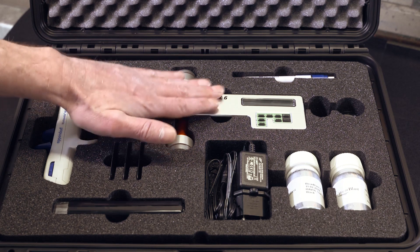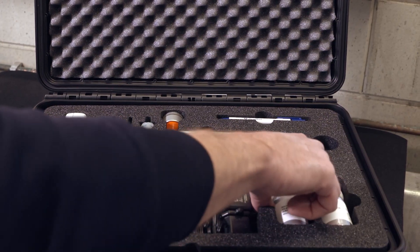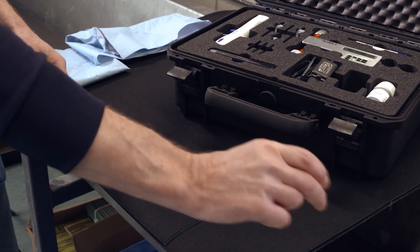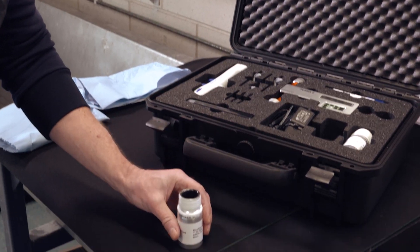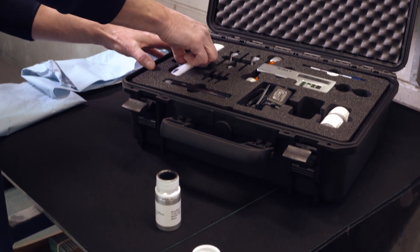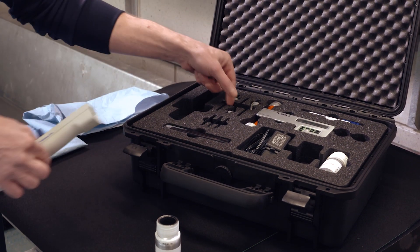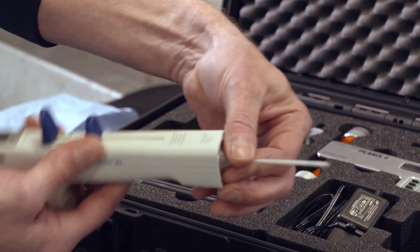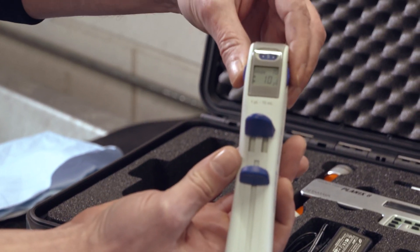First you pick up the bottle of the testing liquid and give it a good shake. After that you can open it and set it aside, then take the digital pipette and a tip. At first the display is turned off, but when you insert the tip the display will be turned on automatically.